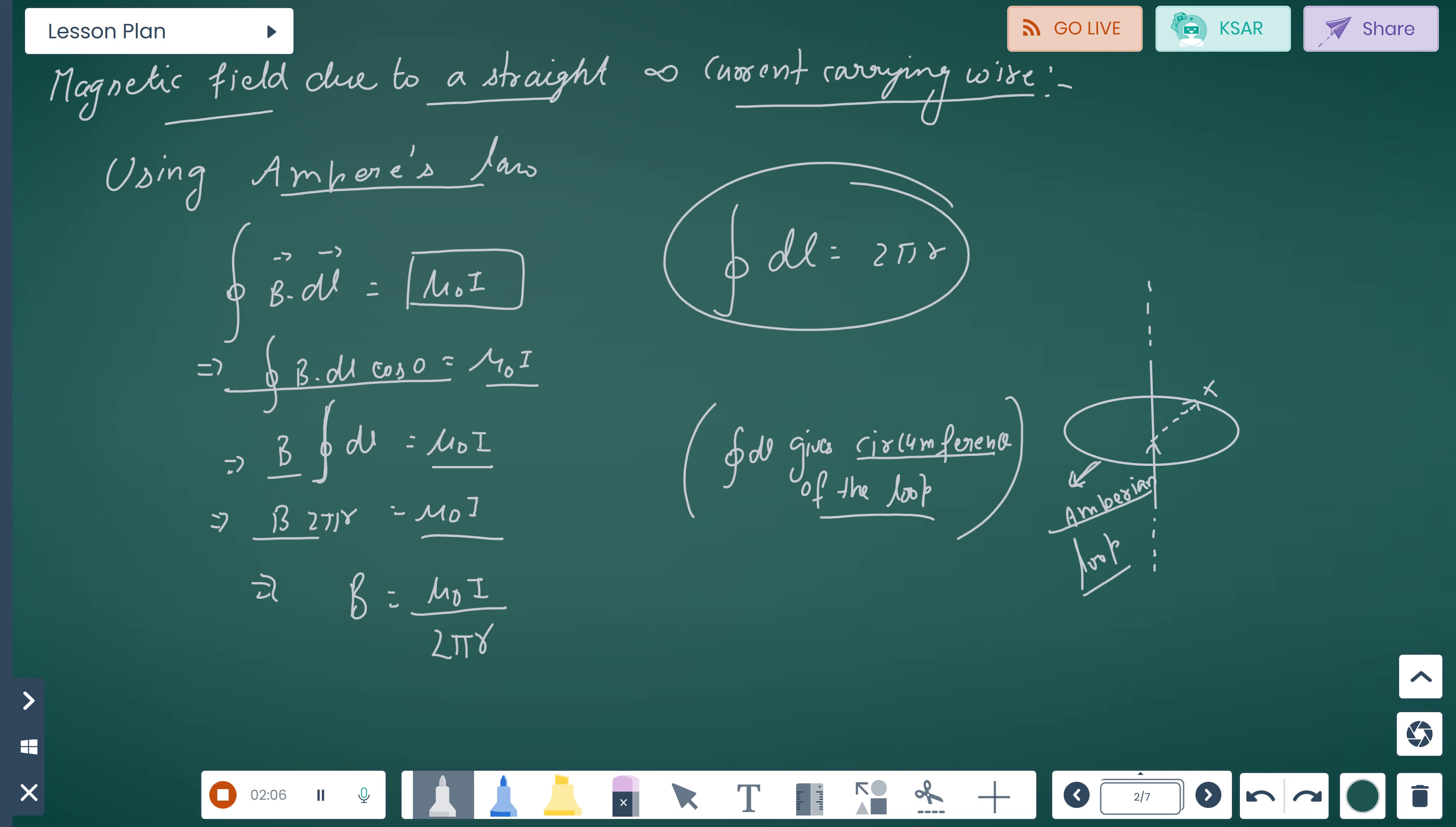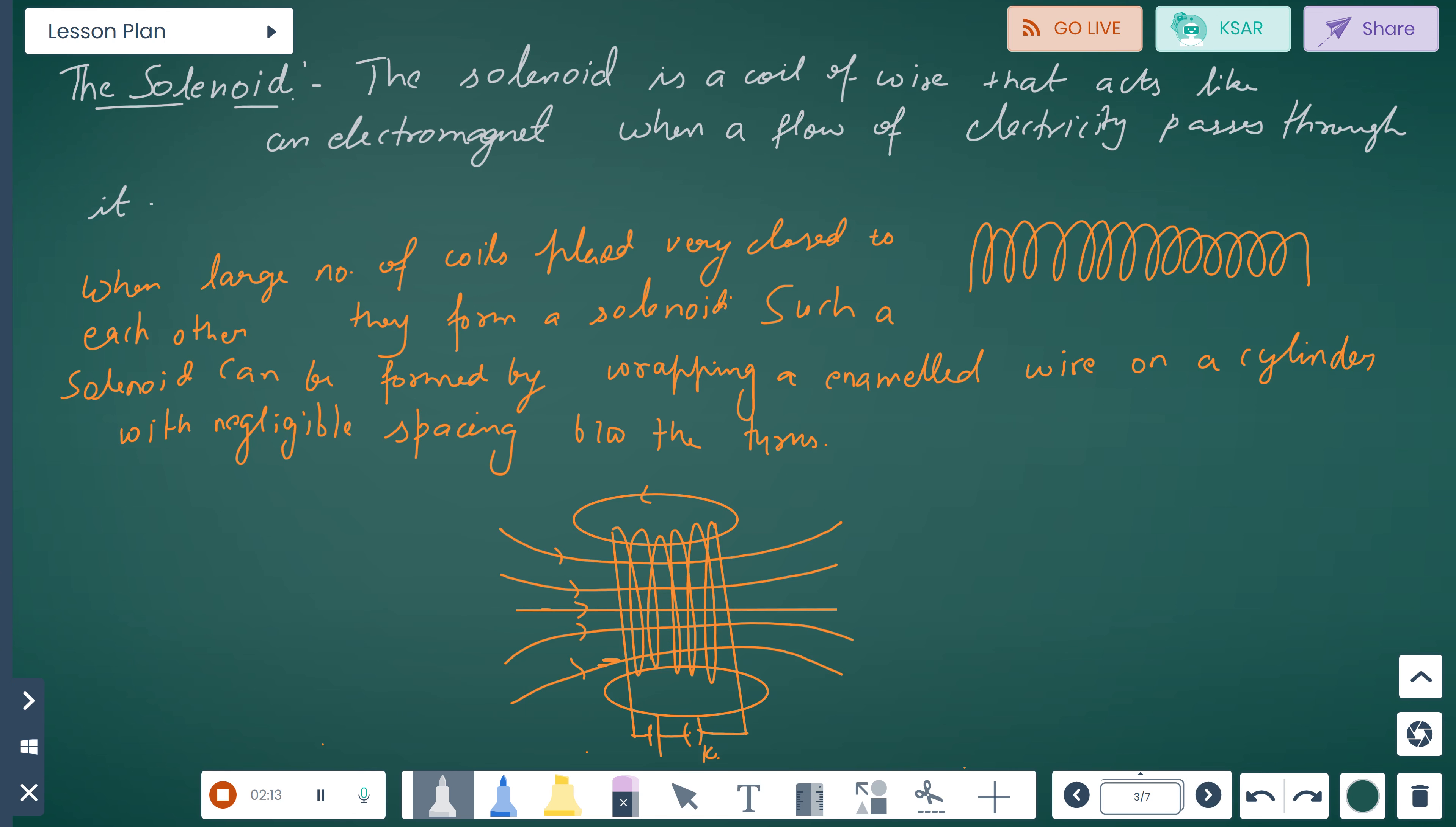So B = μ₀I/2πr. Now solenoid. Solenoid is a coil of wire which acts like an electromagnet when flow of electricity passes through it. This is a large number of coils which are placed with both ends open.